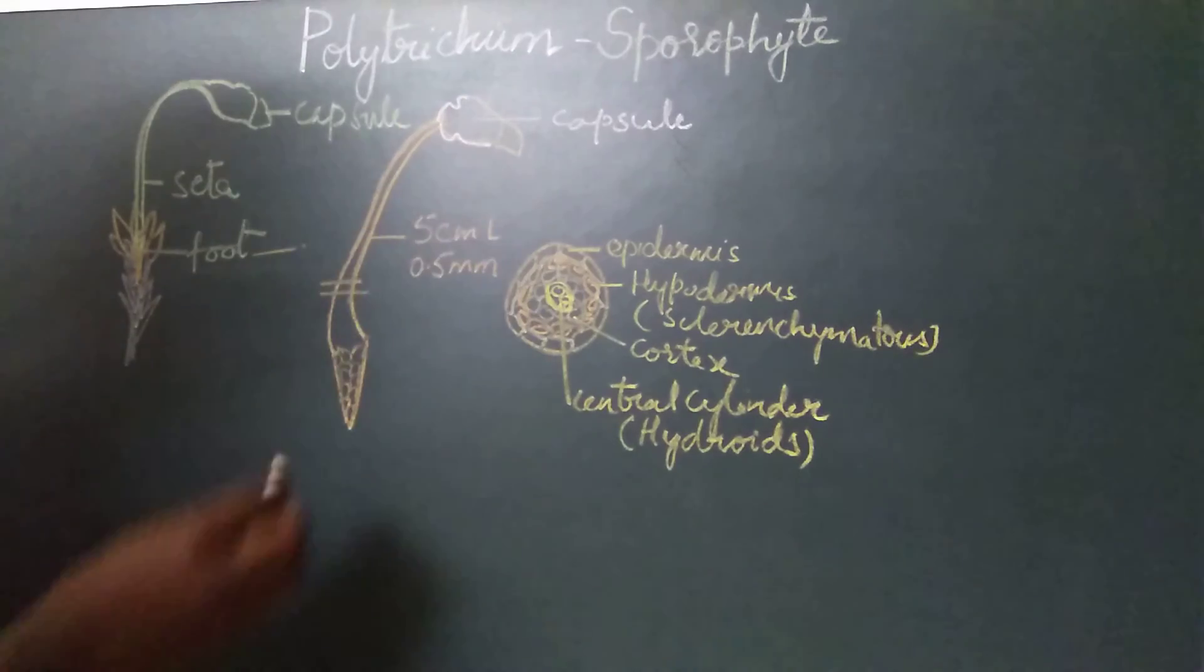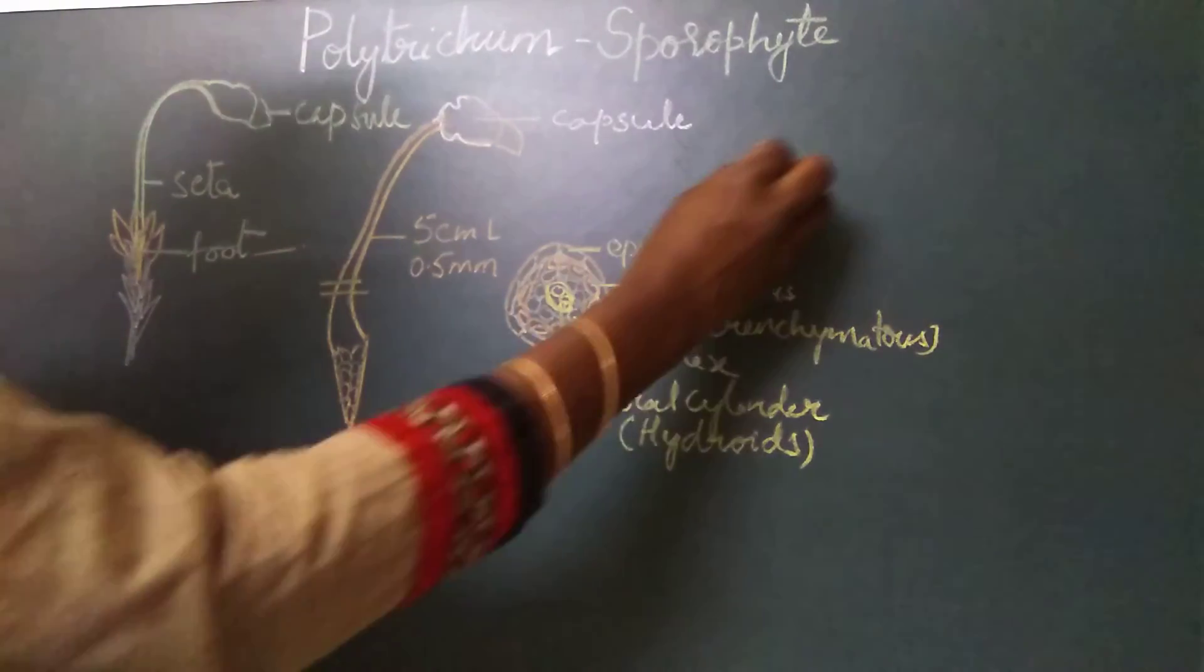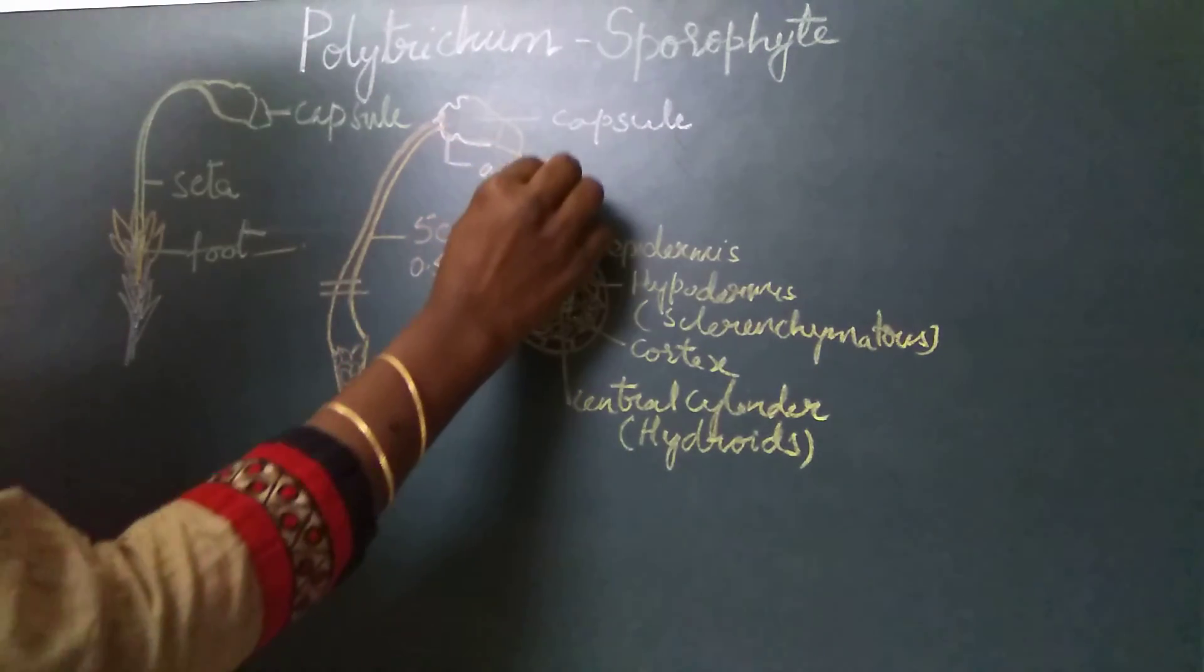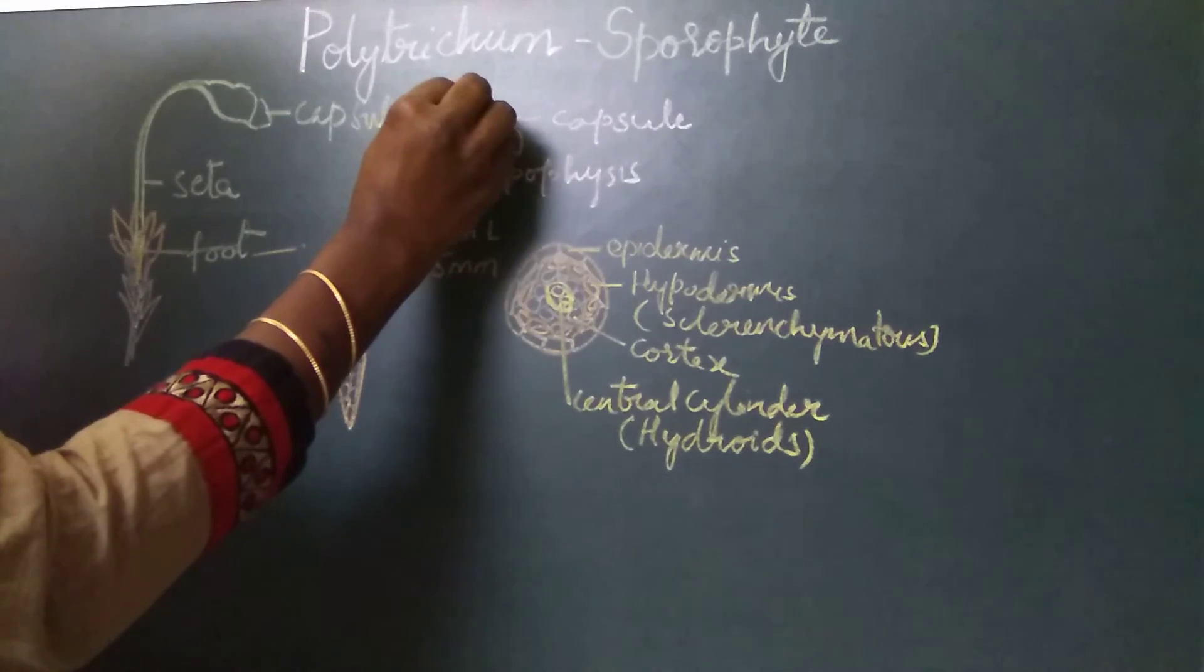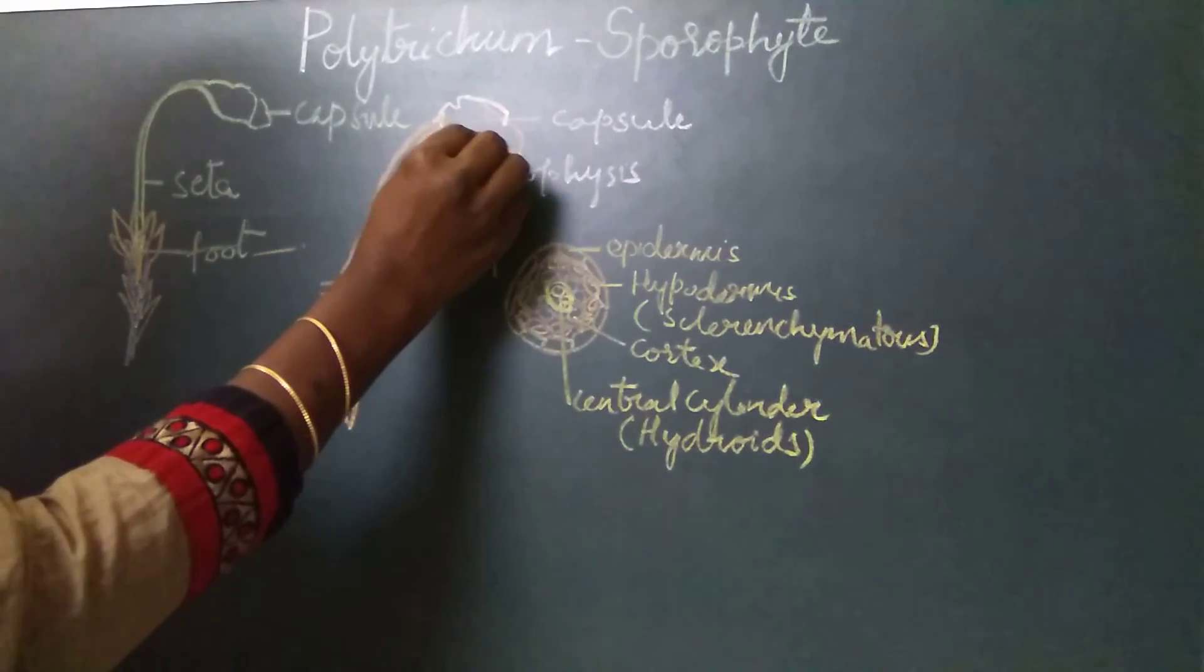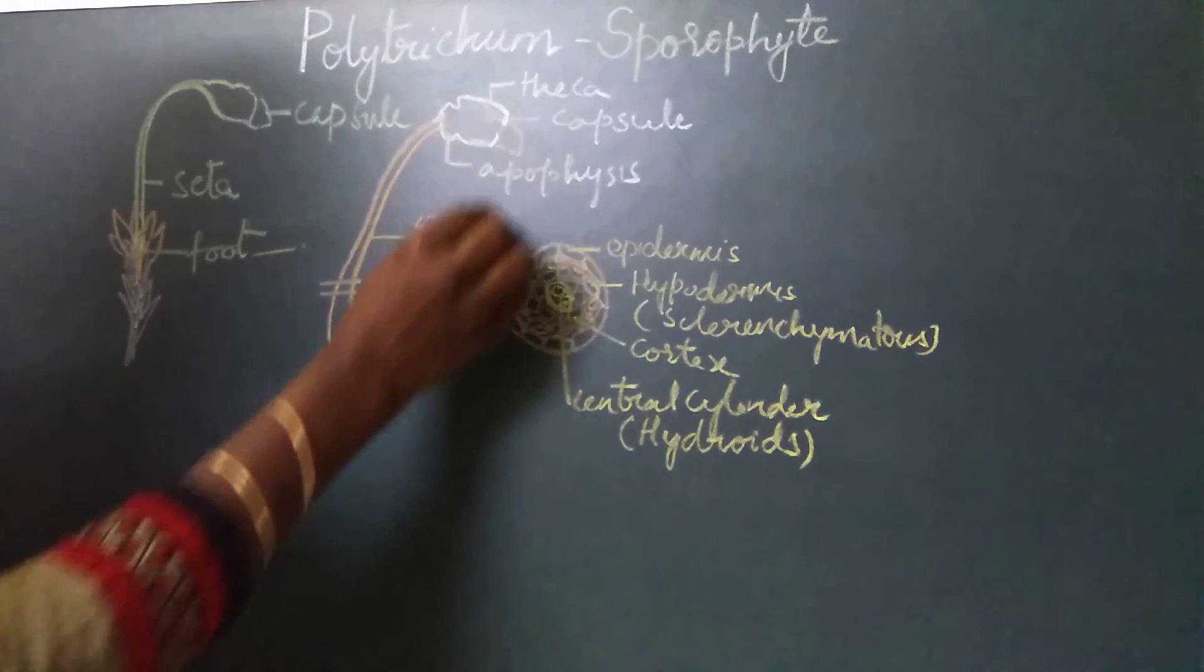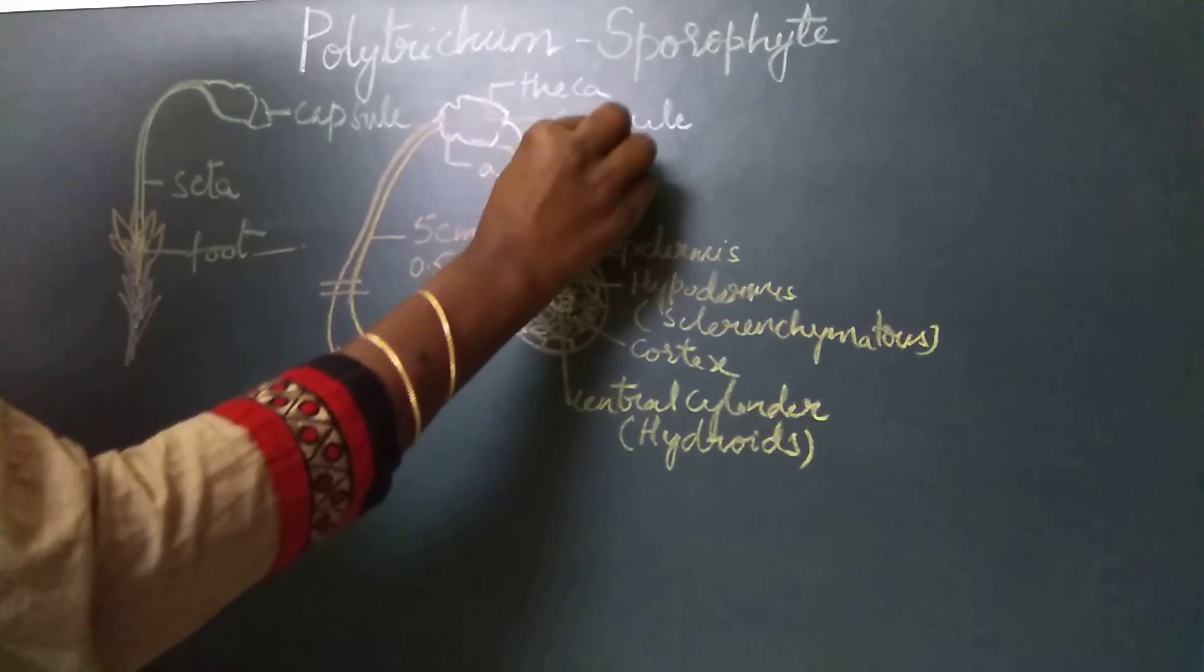One is the basal part of the capsule called the apophysis, the central region of the capsule called the theca, and the upper part of the capsule called the operculum.